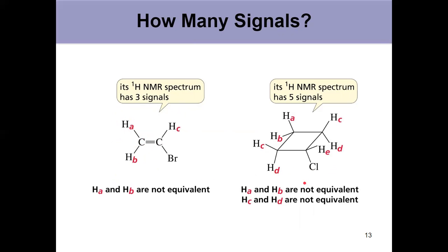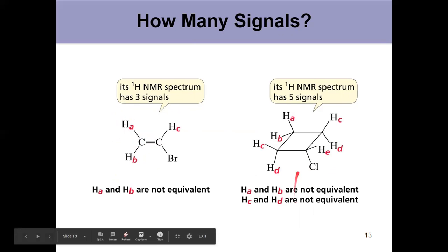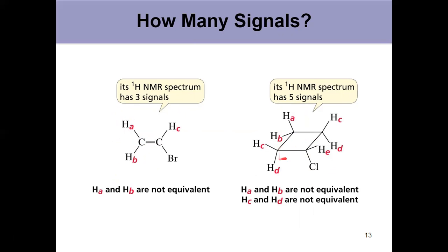Same thing over here. The hydrogens that are locked into place on the top, because that ring is not going to interconvert, they're locked into place. The hydrogens on the top are different from the hydrogens on the bottom. So take a minute, think these over, identify why they are or are not equivalent between slides 12 and 13.